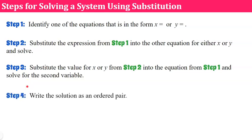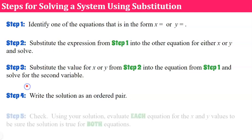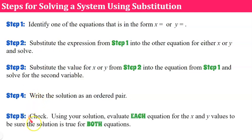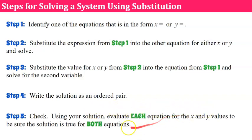Step four: we're going to write our solution as an ordered pair. And step five: we are going to check. We're going to use our solution, evaluate each equation for the x and y values, to be sure the solution is true for both equations.